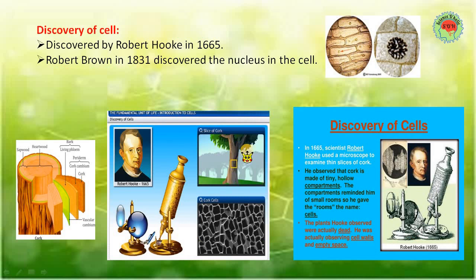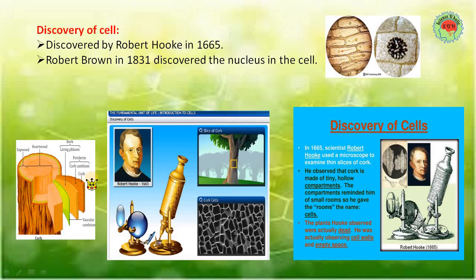Now, the discovery of cell - how was the cell discovered? It was discovered by Robert Hooke in 1665. In 1665, the scientist Robert Hooke used a microscope to examine a thin slice of cork. Cork is the outer covering of a bark - the outer covering of any plant's tree bark is called cork.